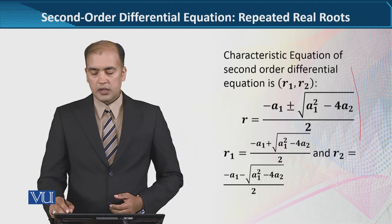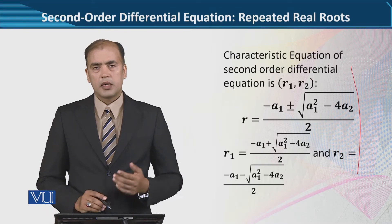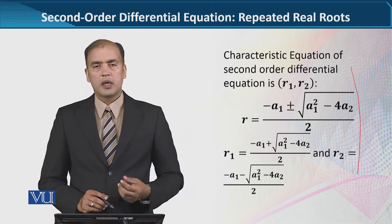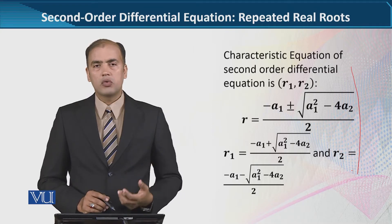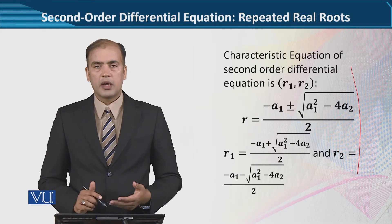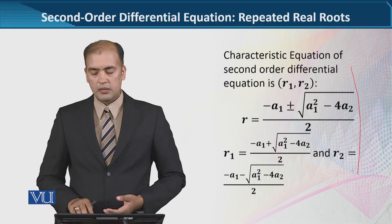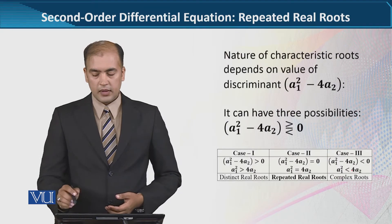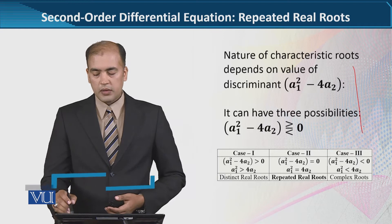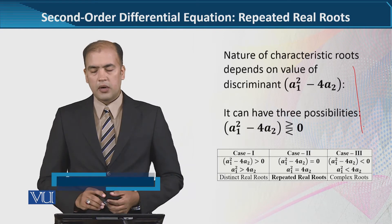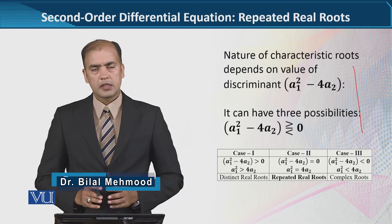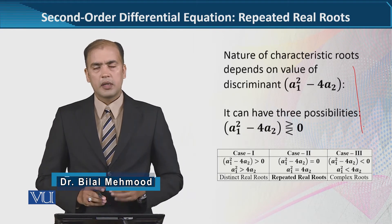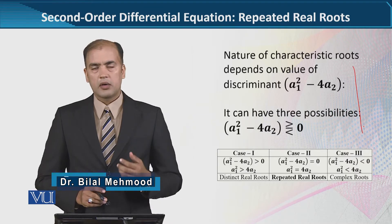We are recalling that characteristic roots are R1 and R2, and what is their formula. So you can pause the video and see these. You can also recall this, because in this lecture too we had written the discriminant.